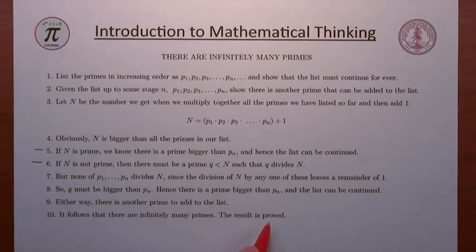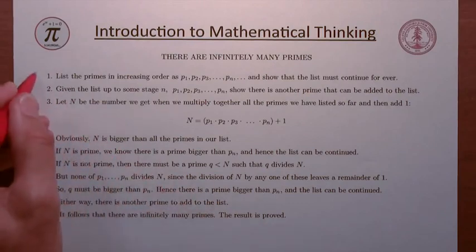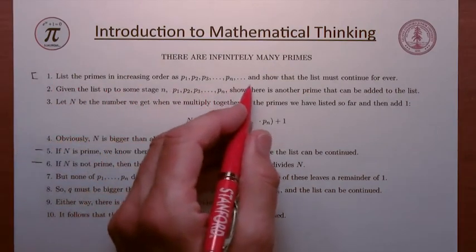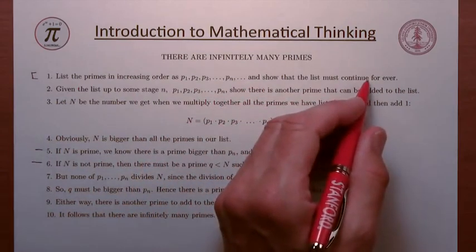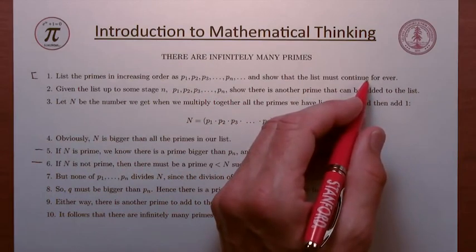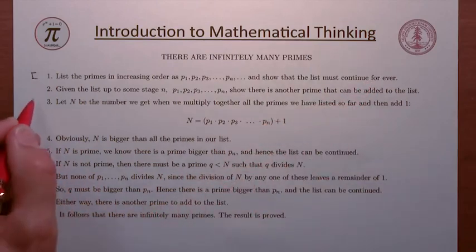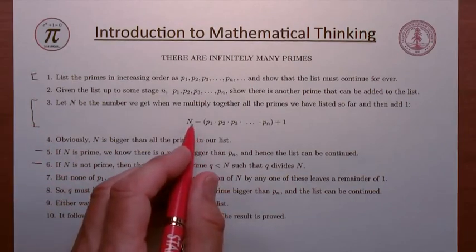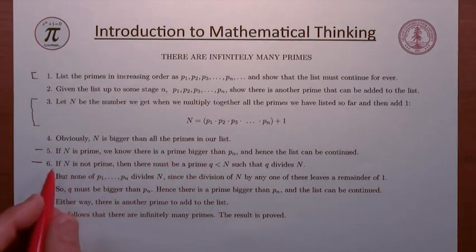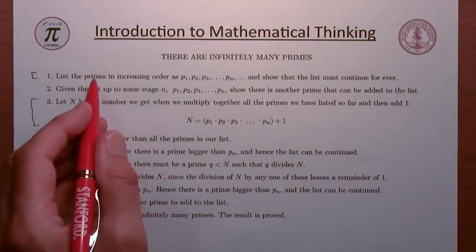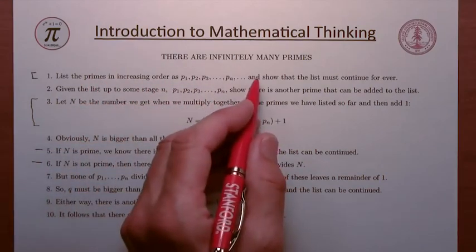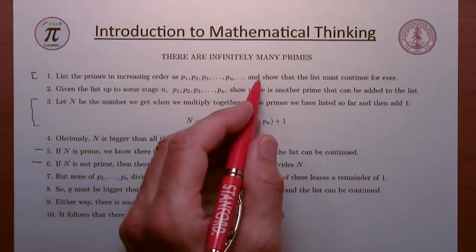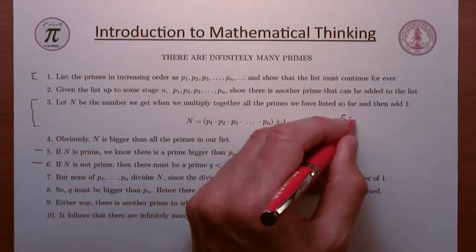There are two creative ideas in this proof. The first is to think about listing the primes and showing that the list can always be continued. The second creative idea was defining the number N in such a way that it guarantees we can always find another prime. The first idea is one that most mathematicians would come up with sooner or later — it's fairly obvious. The second one is genius.